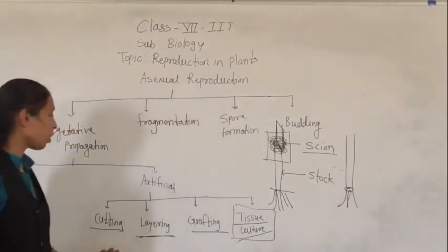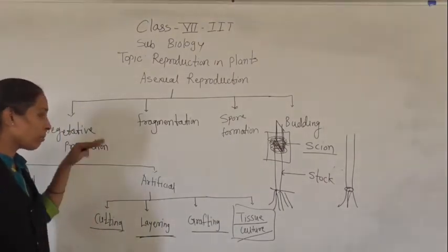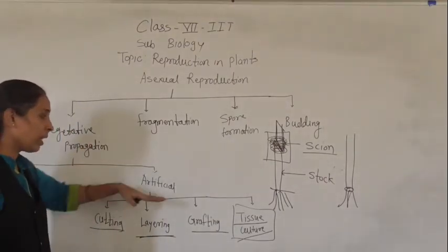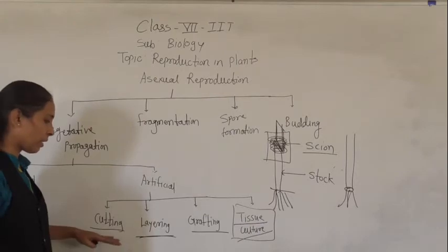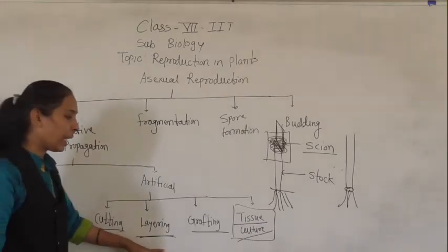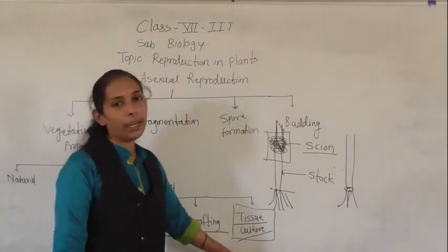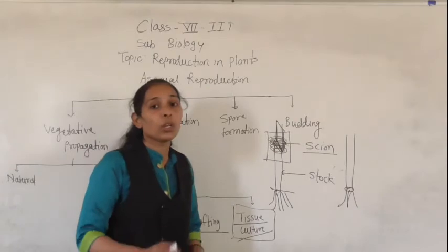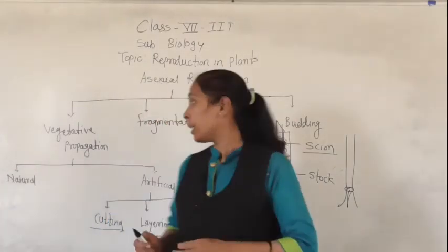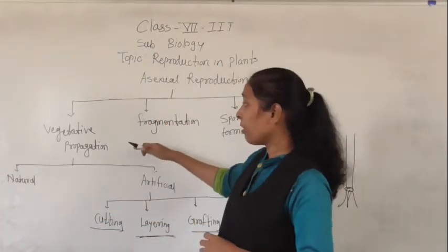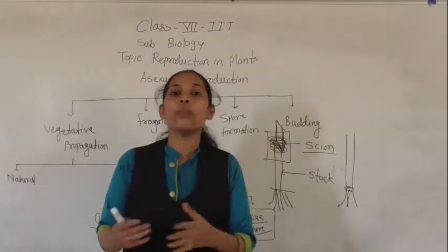So these are the artificial methods of vegetative propagation: cutting, layering, grafting, and tissue culture. Until now we have been discussing the different methods of vegetative propagation.